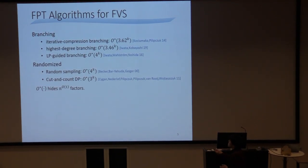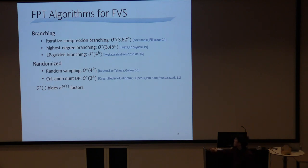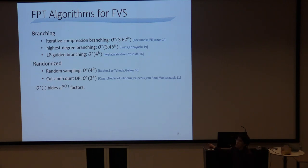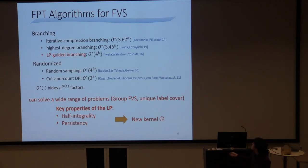There are many FPT algorithms for feedback vertex set, such as branching, iterative compression and branching, highest degree branching, or LP-guided branching. There are also faster randomized algorithms — randomized sampling or cut and count DP. The LP-guided branching algorithm was obtained by me, Wahlström, and Yoshida in 2016.